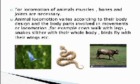For locomotion of animals, muscles, bones and joints are necessary. Animal locomotion varies according to their body design. For example, cows walk with legs, snakes slither with the whole body, birds fly with their wings, etc.